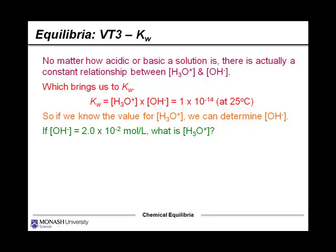No matter how acidic or basic a solution is, there's actually a constant relationship between H3O+ and OH-. If we focus on the concentration of those two species, we can see that gives us a constant value. That brings us to Kw, which is an equilibrium constant. At 25 degrees, the Kw value for water, the product of the H3O+ and OH- concentrations, is 1 × 10^-14. So if we know the value for H3O+, we should always be able to determine the concentration of hydroxide and vice versa.